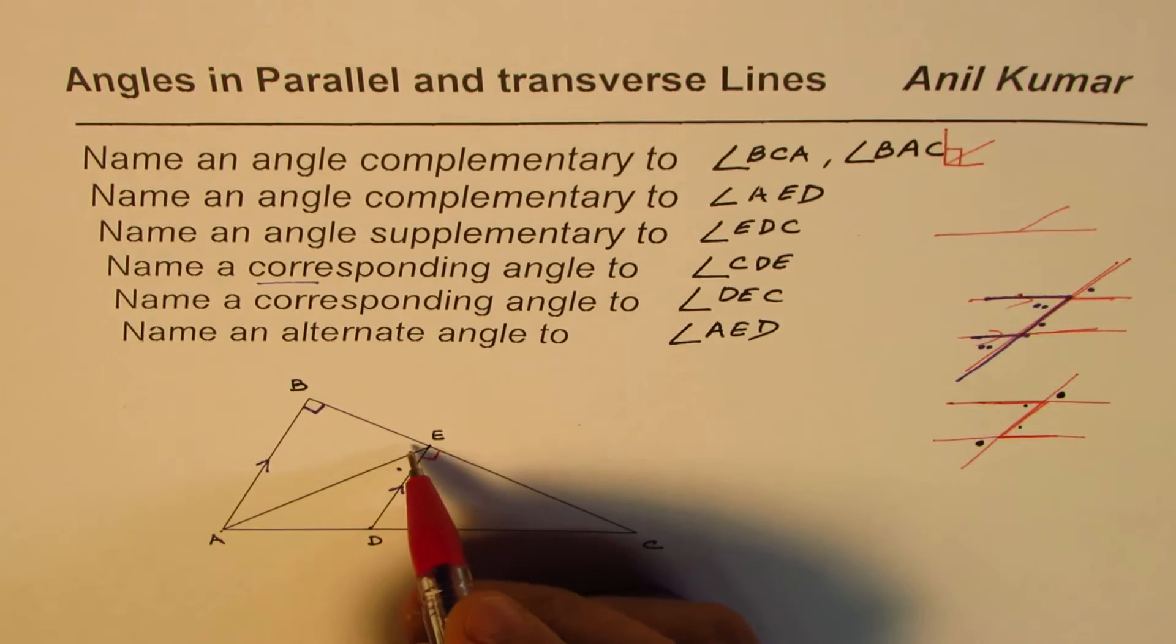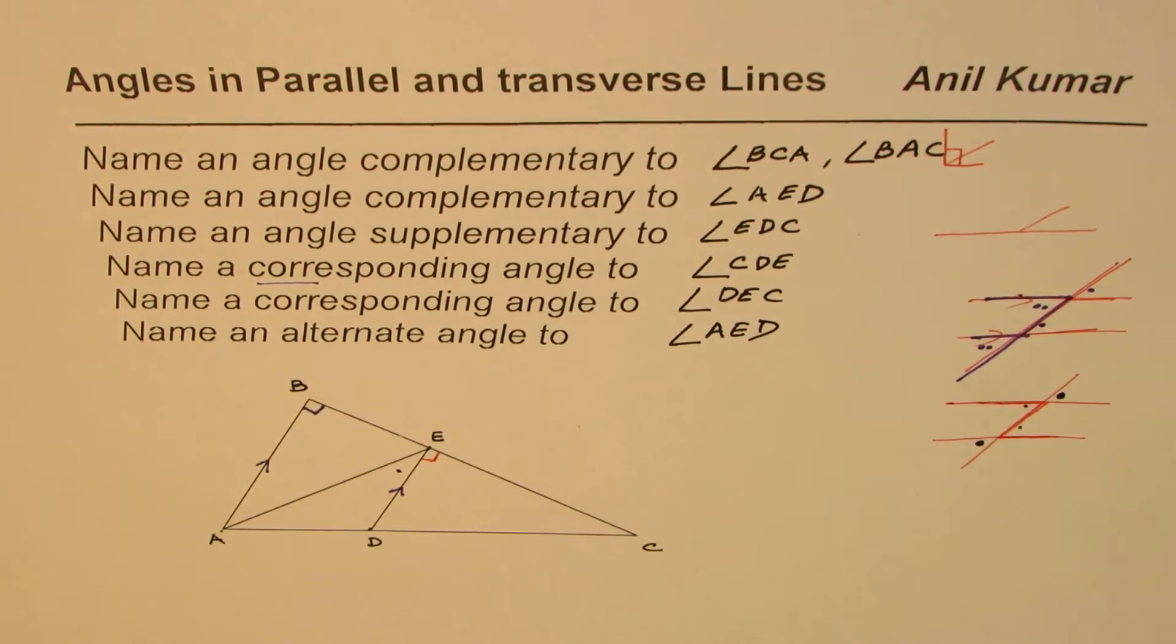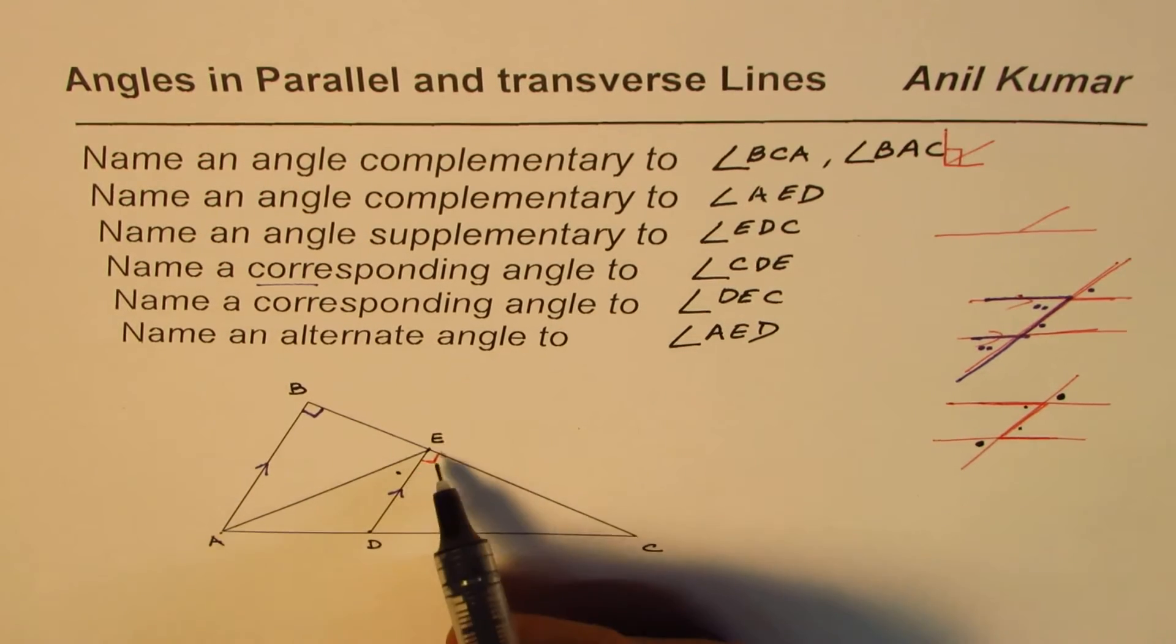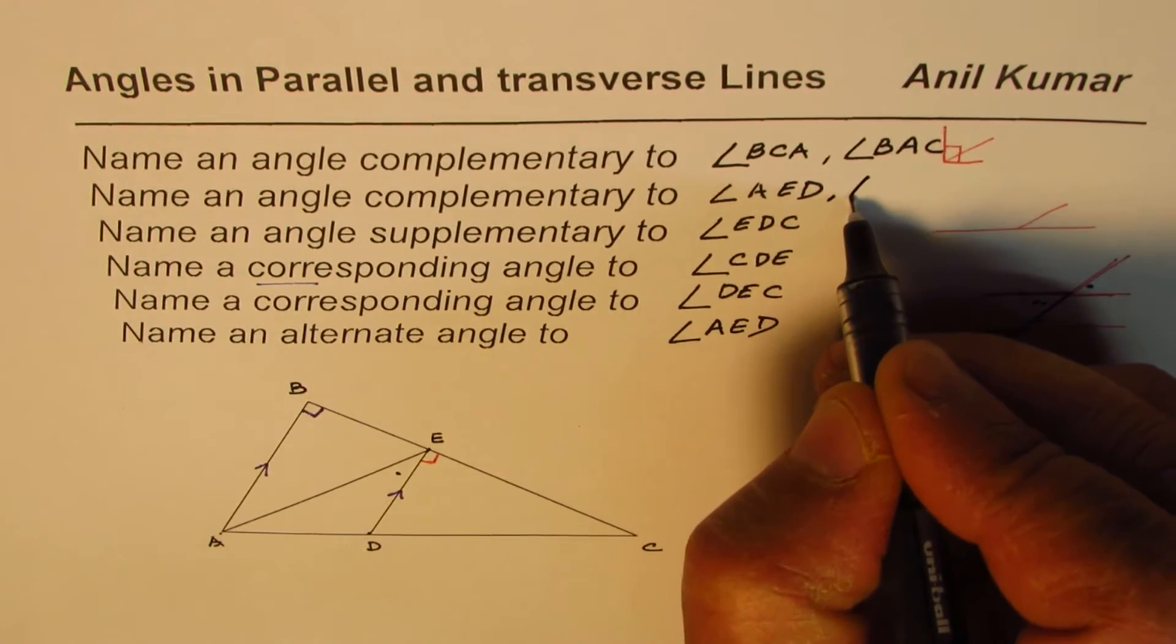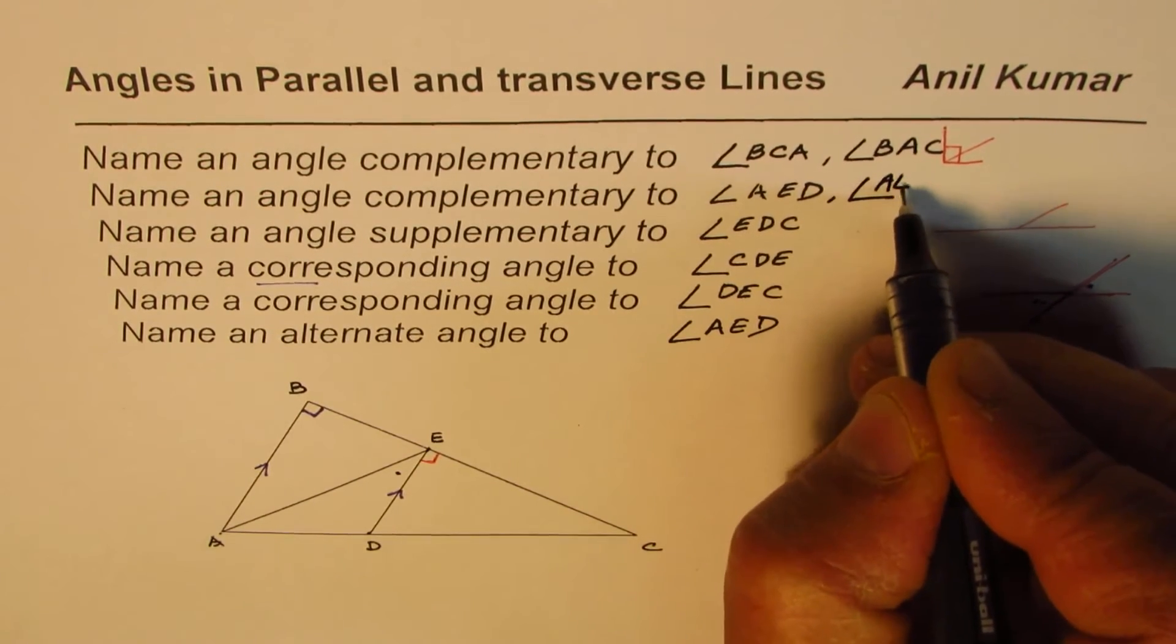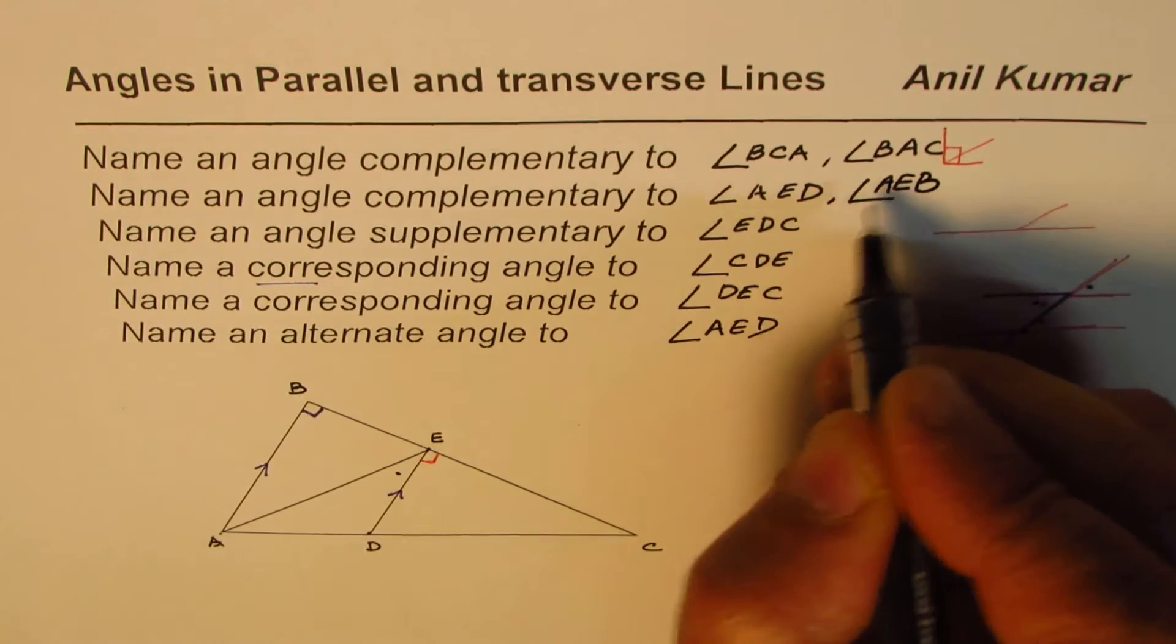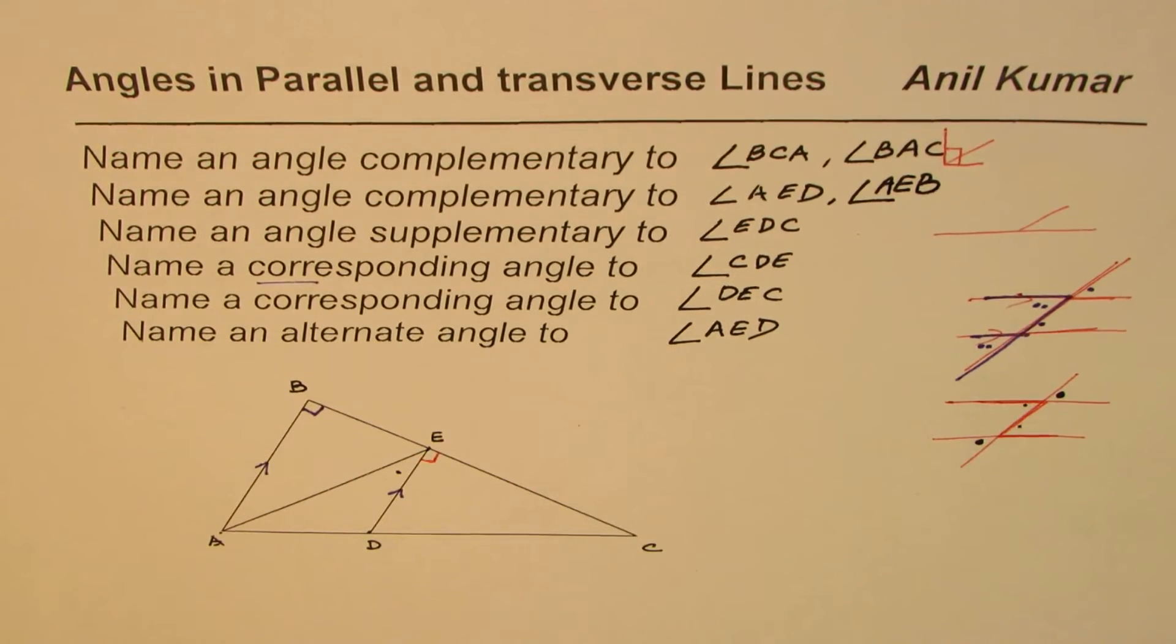So complementary to angle AED is AEB. So this one is AEB, you get the idea right, so that is how we find it. Extremely difficult question right?